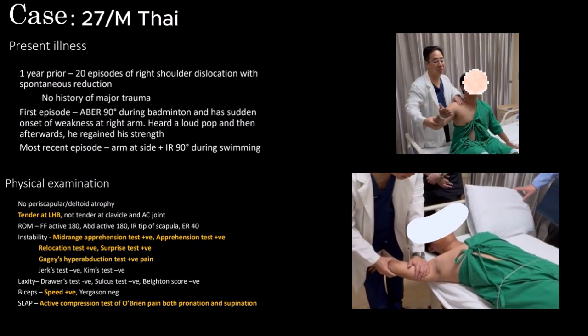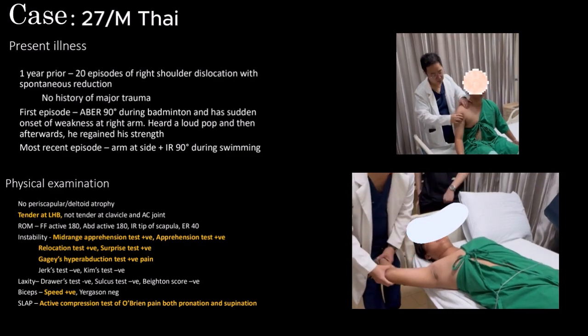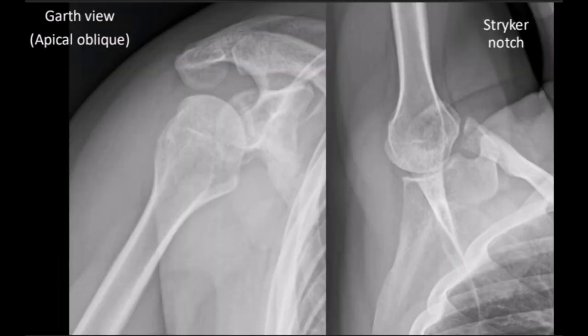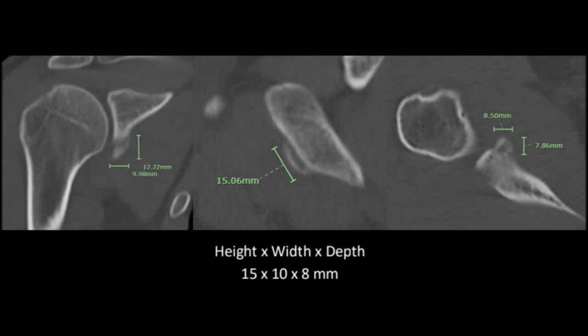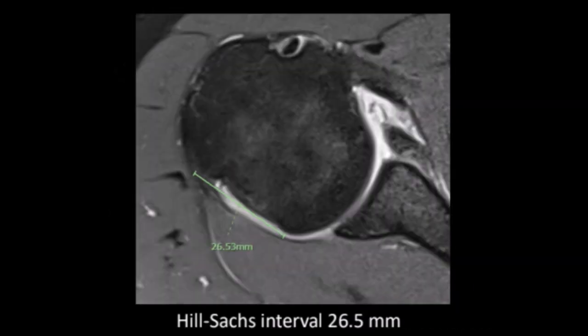Key examinations for anterior instability all tested positive. X-rays show a silhouette and a bone defect of the inferior glenoid, and a medium-sized Hill-Sachs lesion. CT scan reveals a Bony Bankart lesion with a size of 15 x 10 x 8 mm, glenoid bone loss of 11.7%, and a Hill-Sachs interval of 26.5 mm.